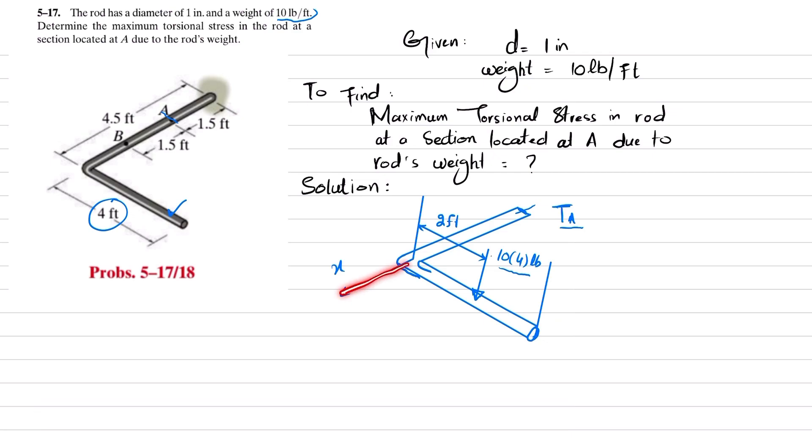This torque A we have to assume. You can see that this is the x axis, so due to this load it will move, it will rotate about the x axis in clockwise. So your torque should be in counterclockwise, so I will represent it as T_A.